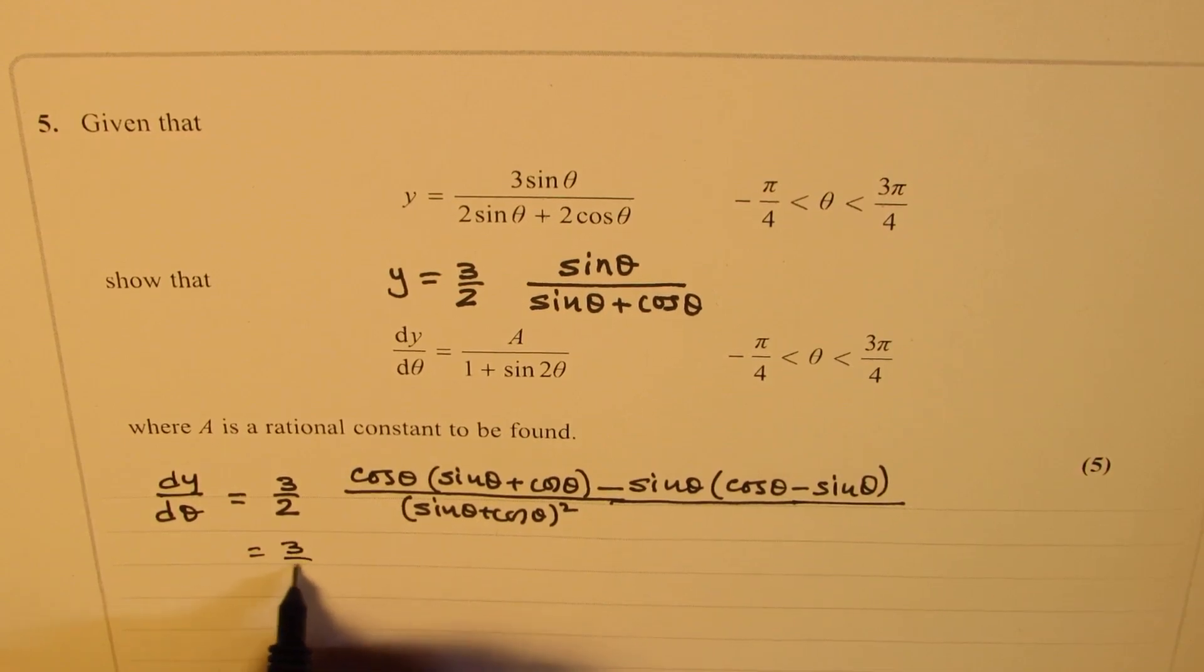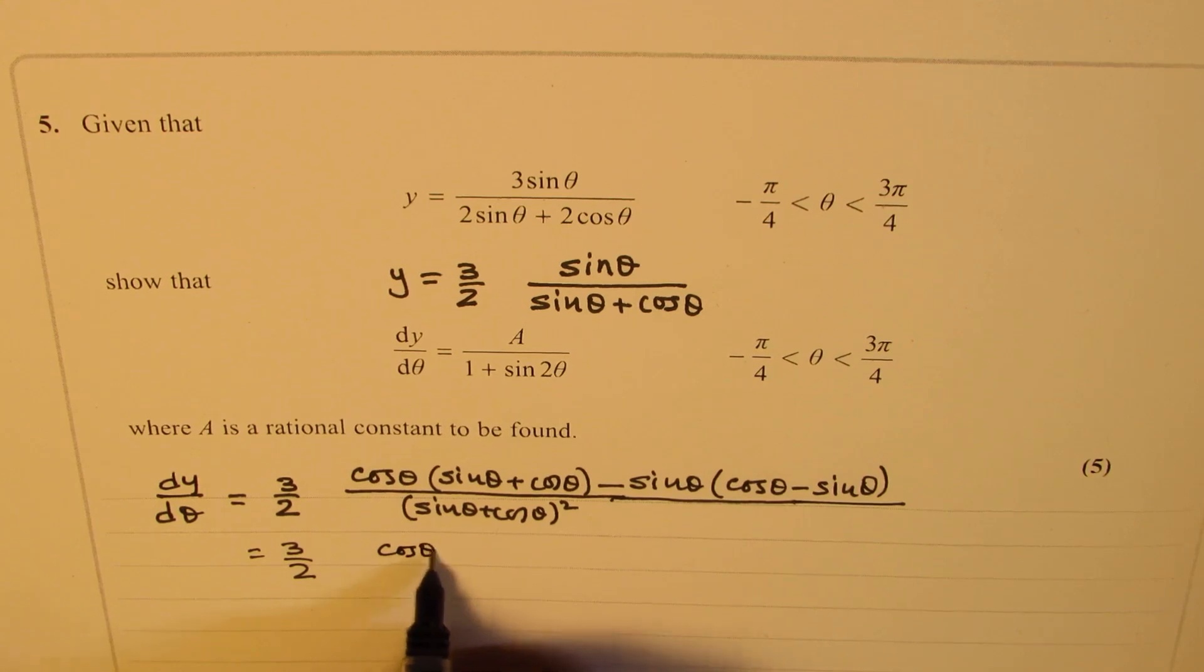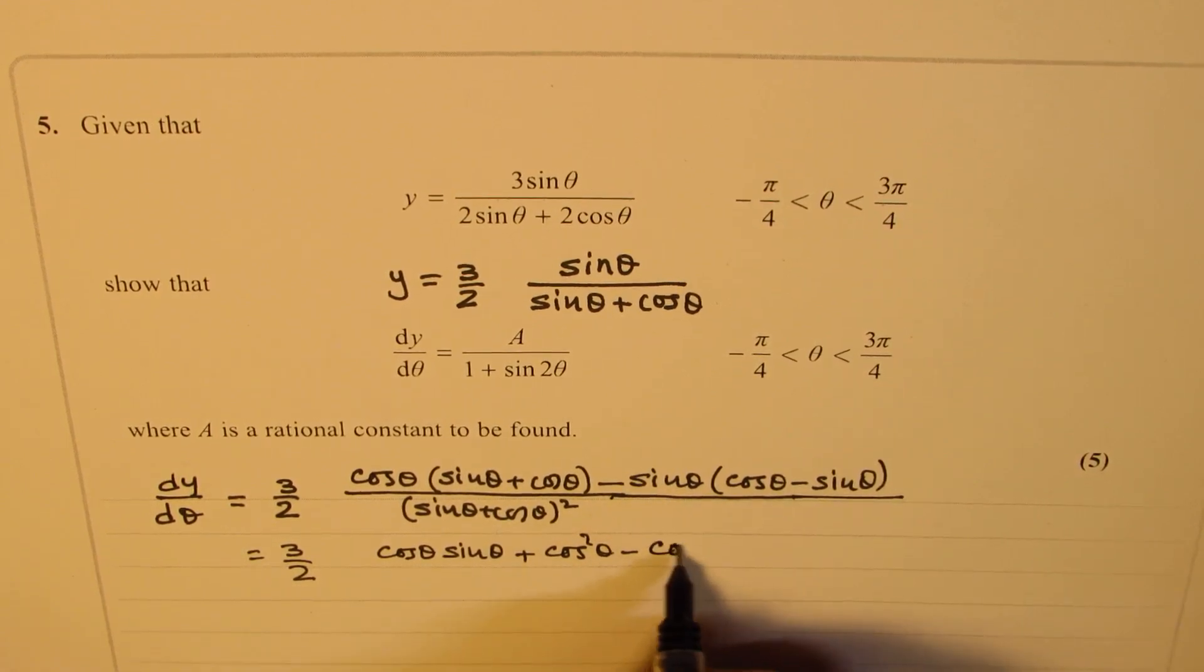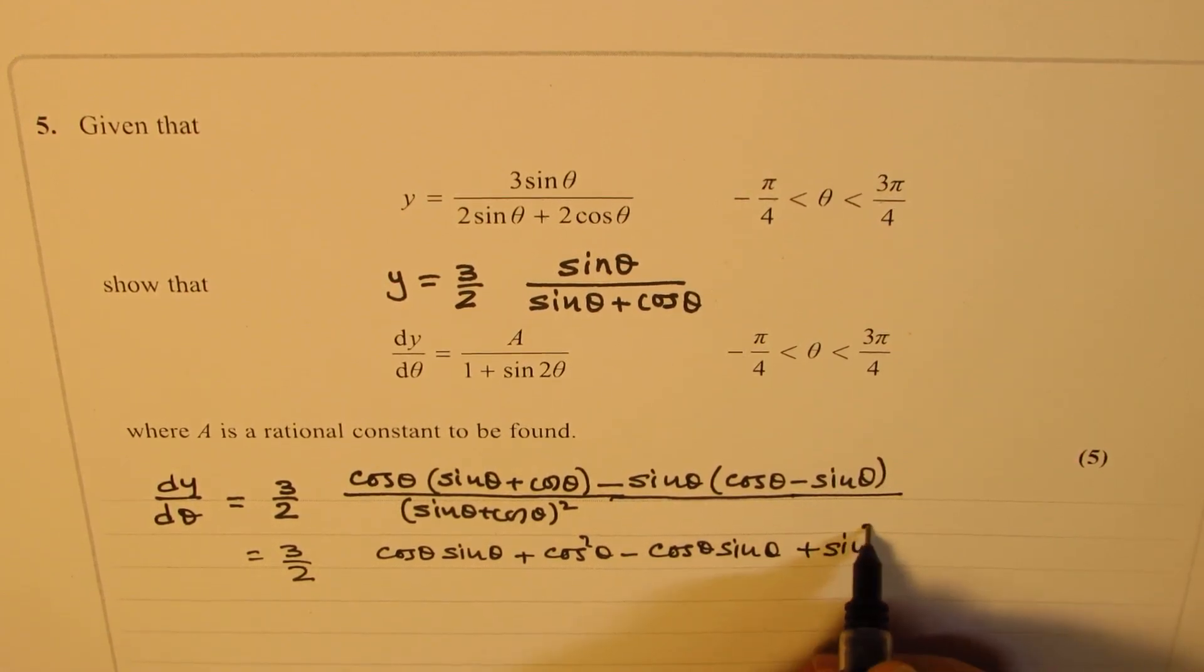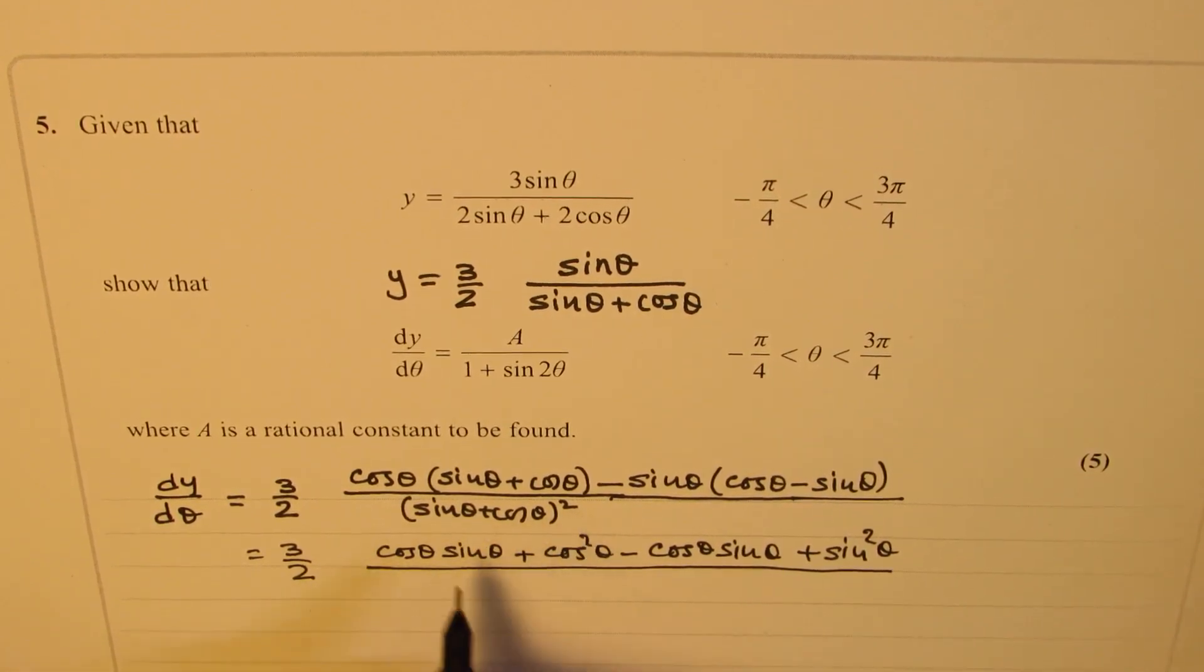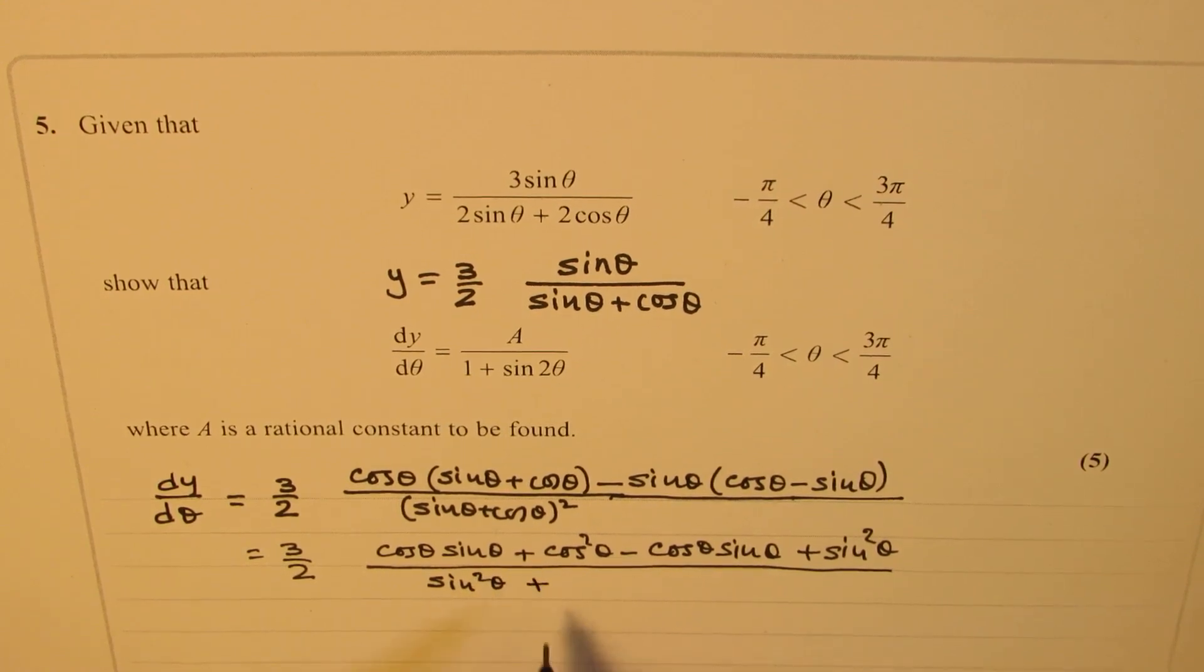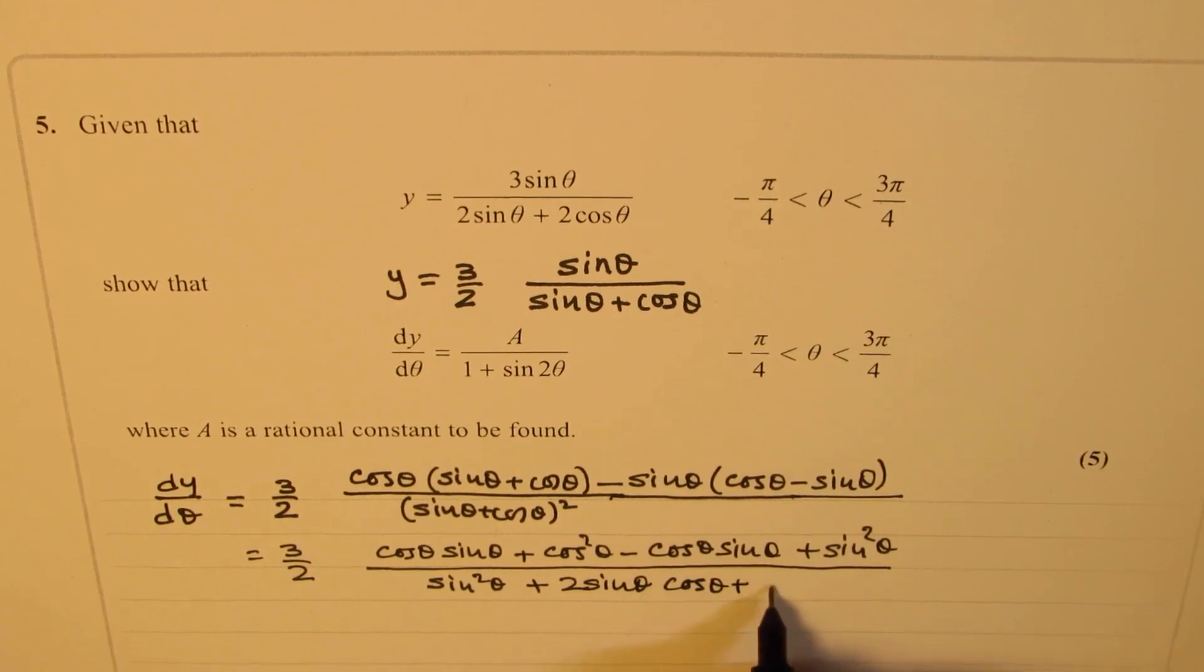So this will be equal to 3 over 2. We can now open this bracket. Cos theta sine theta plus cos square theta minus sine theta cos theta. Let me write cos theta sine theta minus minus becomes plus sine square theta divided by. Let's expand this also. Since we have 1 plus sine 2 theta in the denominator, we get this as sine square theta plus 2 sine theta cos theta plus cos square theta.